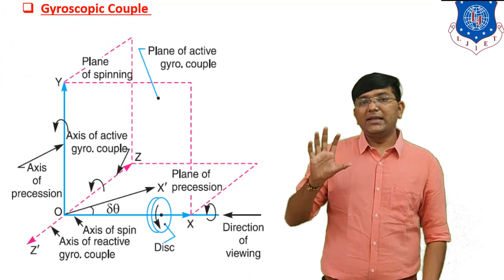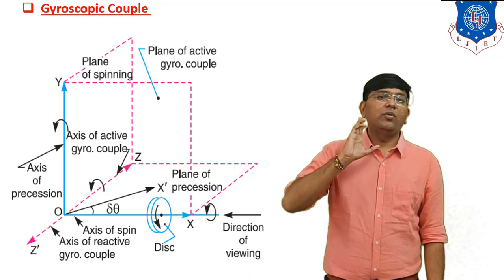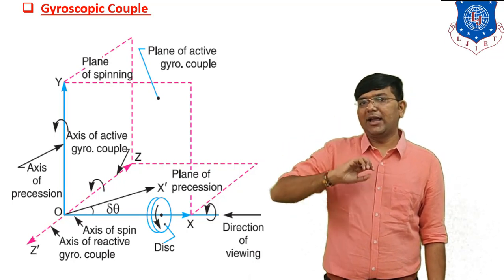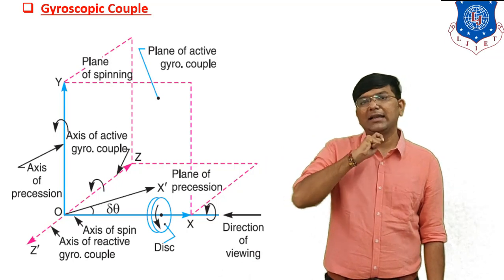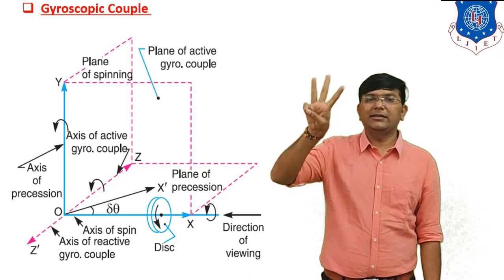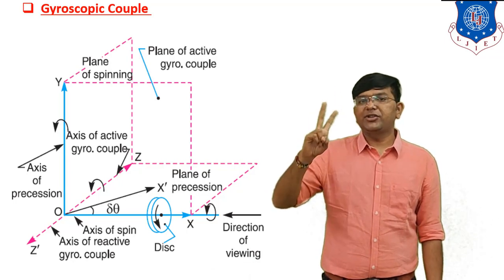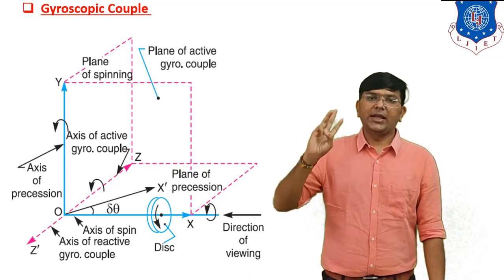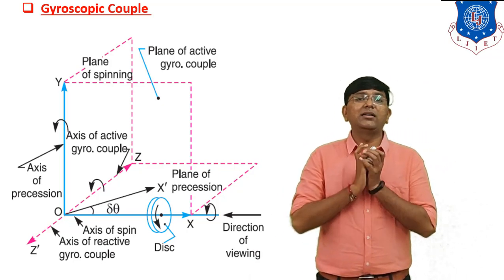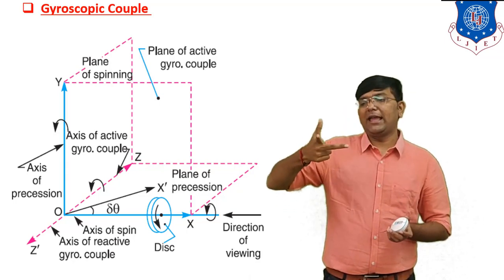First, you have to understand the basic principle and diagram of the Gyroscope. Any device having one rotating disc or one rotating rotor is considered a Gyroscopic device. You have to remember there are three axes, and all three axes are at right angles to each other.